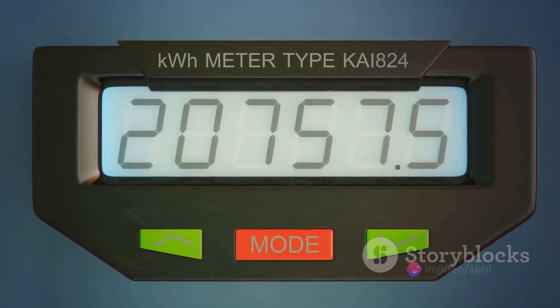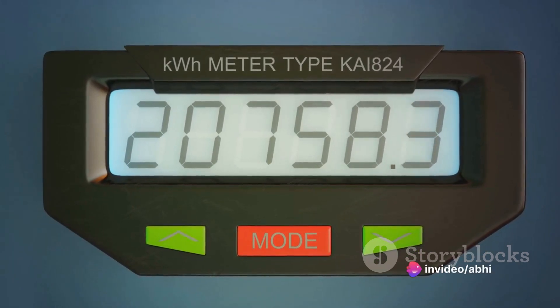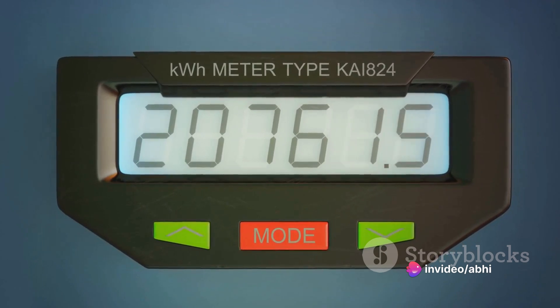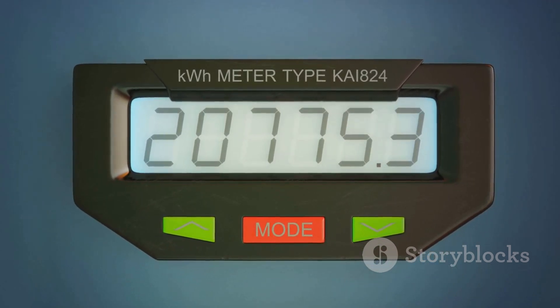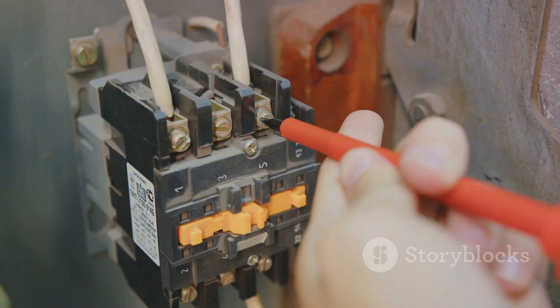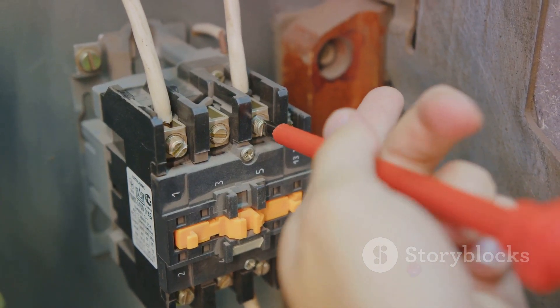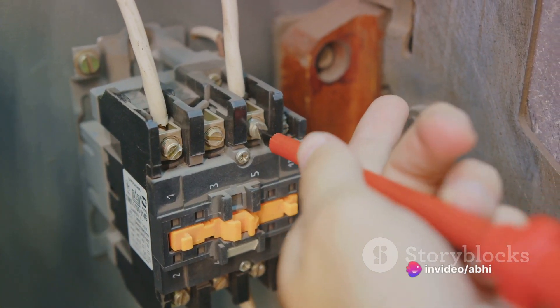Therefore, if there is no difference, there is no current flow. This brings us to our bird. The bird sits on a power line, which is at a high potential. Since the bird is touching only one wire, it is at the same potential as the wire it's sitting on.